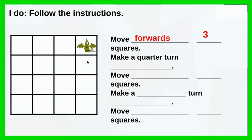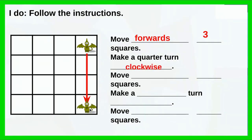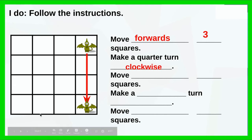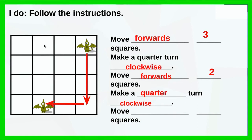Here's another example. My dragon is going to move forward three squares: one, two, three. Then make a quarter of a turn clockwise, so I should be facing that way. Then move forwards two squares — if I'm facing that way and going forward, I should end up there. Then make a quarter of a turn clockwise again, now facing that direction, and move forwards three squares.